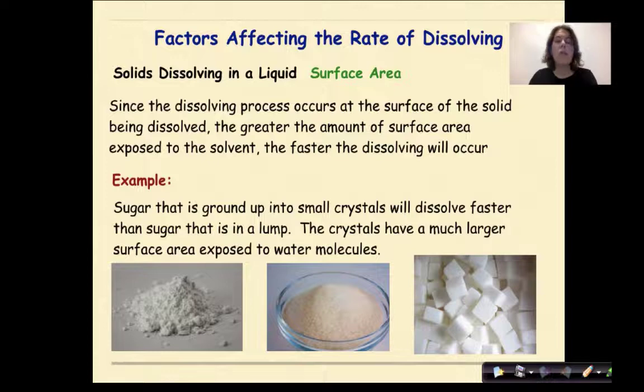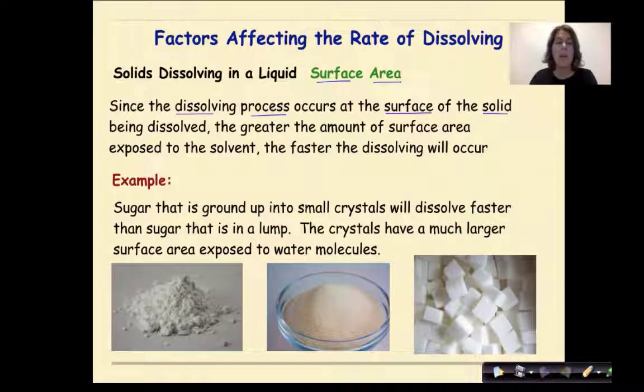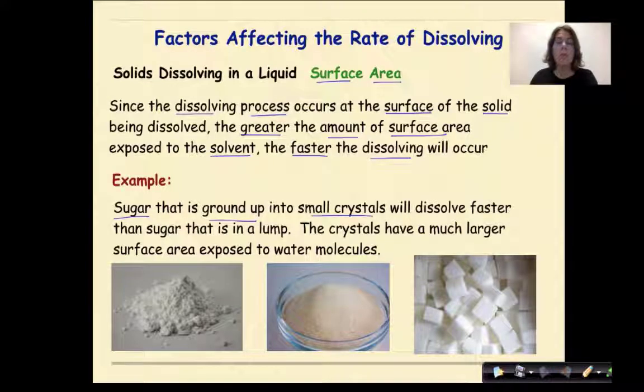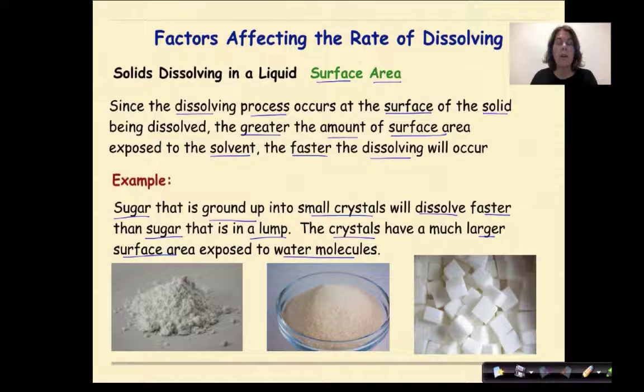Solids dissolving in a liquid focus on surface area. Since the dissolving process occurs at the surface of the solid being dissolved, the greater the amount of surface area exposed to a solvent, the faster the dissolving will occur. For example, sugar that is ground up into small crystals will dissolve faster than sugar that is in a lump. The crystals have much larger surface area exposed to water molecules.